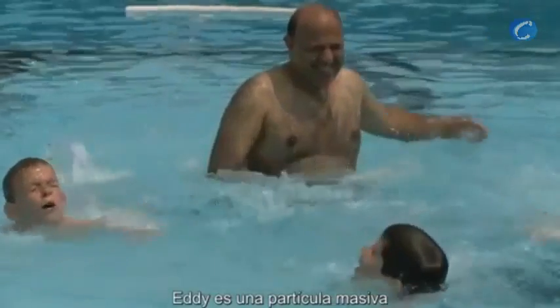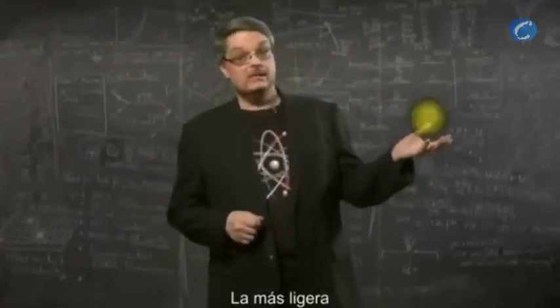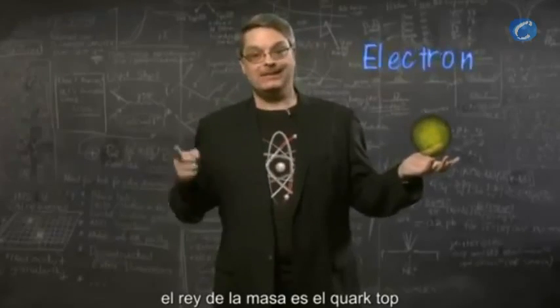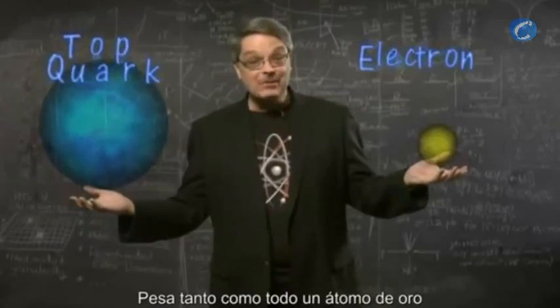The lightest of the familiar subatomic particles is the electron, while in the subatomic world, the king of mass is the top quark. It weighs about as much as an entire atom of gold, about 350,000 times more than the electron.